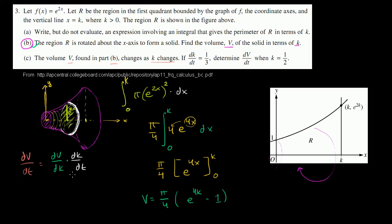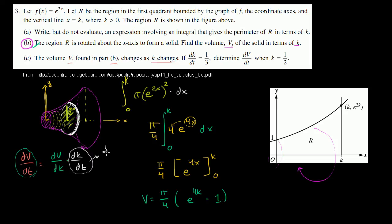If you view differentials as very small numbers, this makes common sense — those dk terms would cancel out, leaving dv/dt on both sides. We already know dk/dt is one third when k equals one half. We can find dv/dk easily because we have v as a function of k.